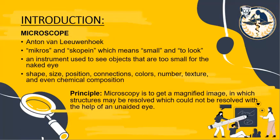The usage of the microscope, its parts, and its different functions have been perfected over the past 300 years since the discovery of Anton van Leeuwenhoek. The principle of microscopy is to get a magnified image in which structures may be resolved that could not be resolved with the help of an unaided eye.